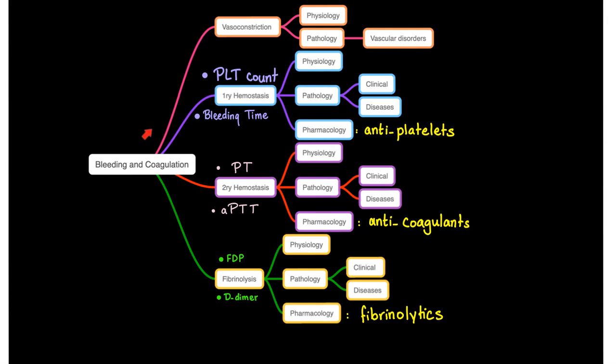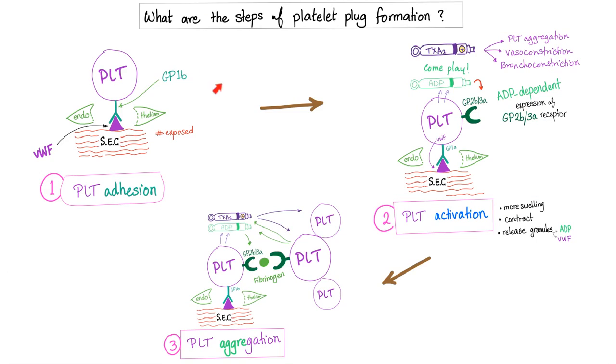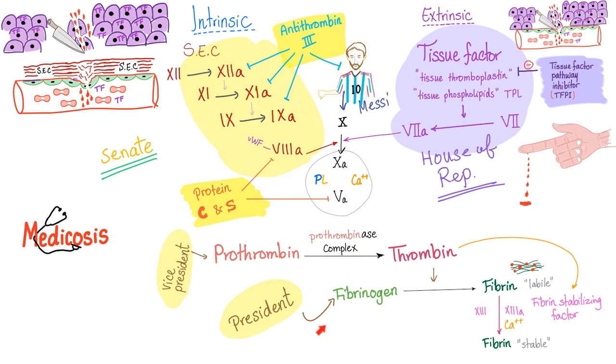Here are the steps of hemostasis we discussed before: primary hemostasis and secondary hemostasis. Of course you know the coagulation cascade because we have talked about this in previous videos.